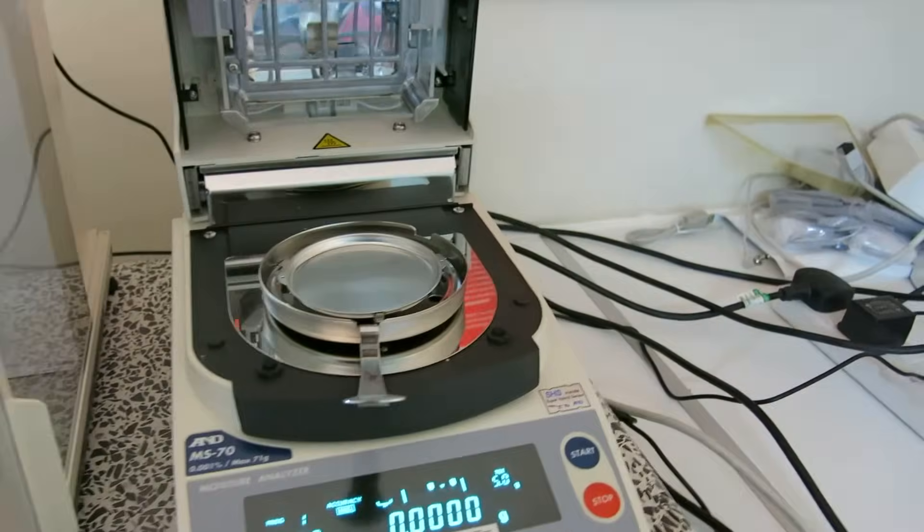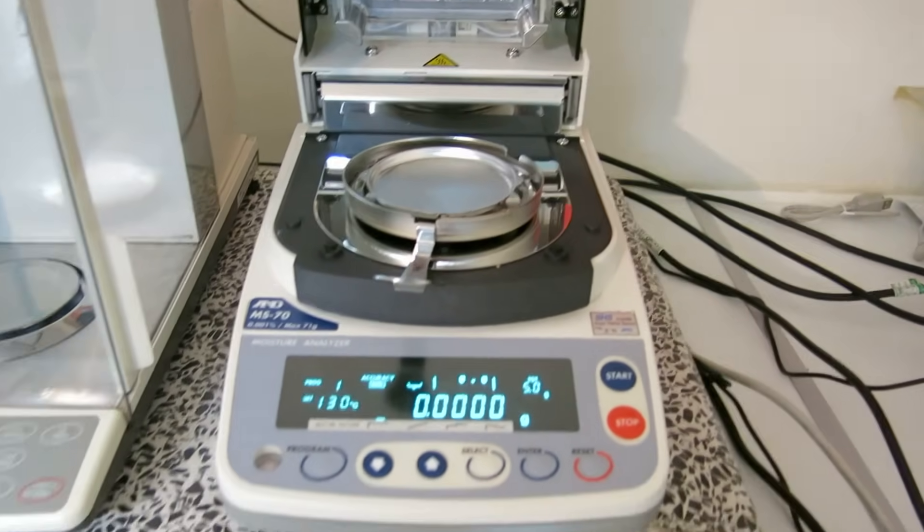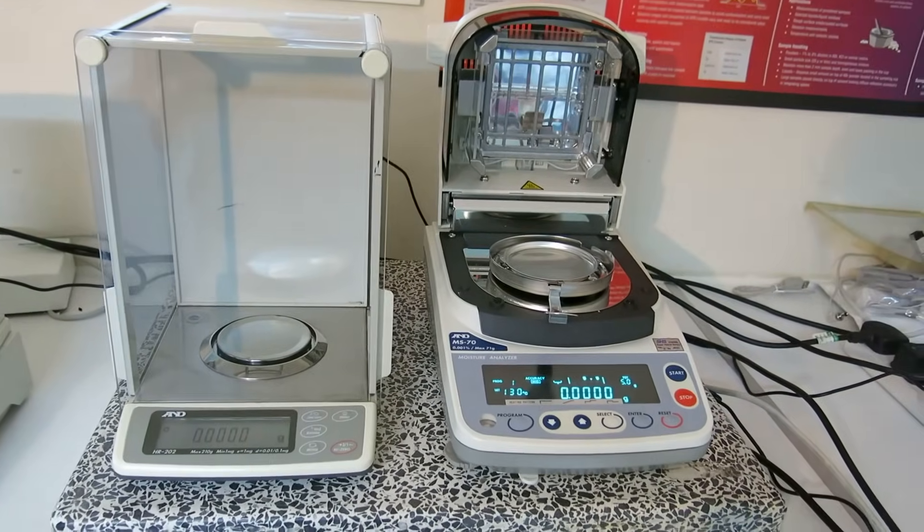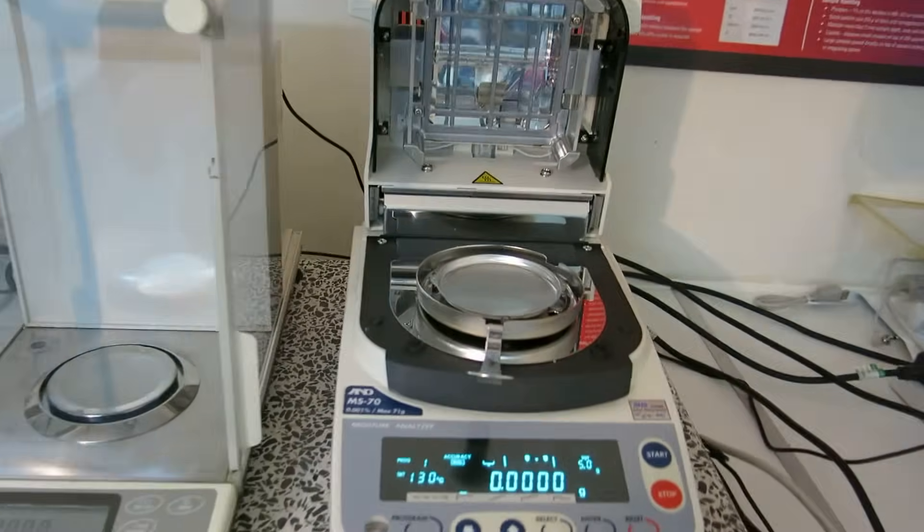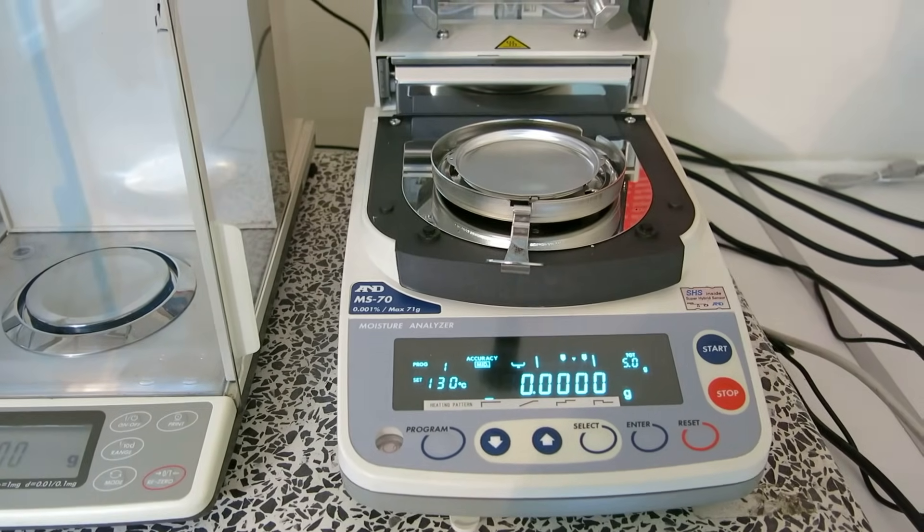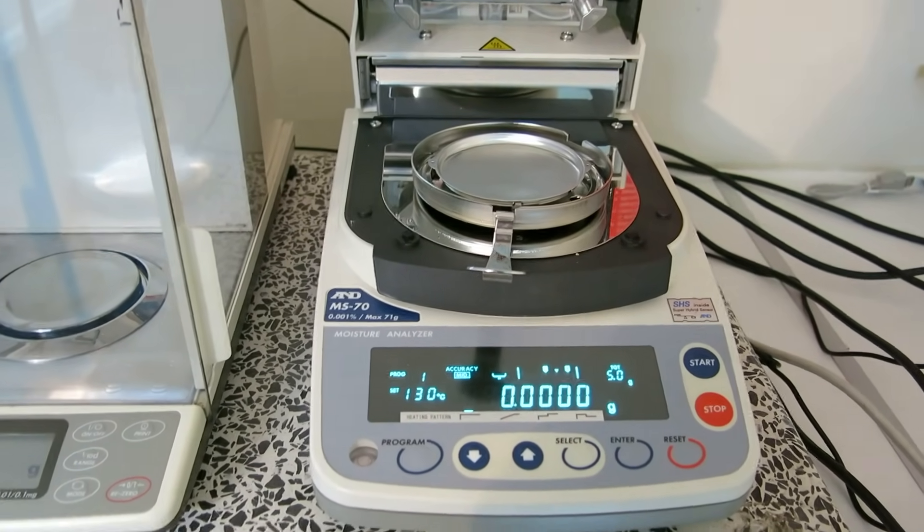And finally we've got the A&D MS70, which is used in low moisture applications. It's 4 decimal place. And it's a really good balance. Particularly plastics, rubbers, where you're looking to determine small levels of moisture. So this will max weigh 71g. It's an MS70 4 decimal place.